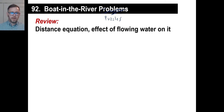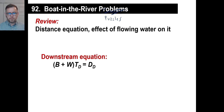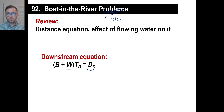So let's say the water speed is 5 miles an hour and you're rowing at 8 miles an hour — your total speed is 13 miles an hour downstream. Now you turn around. You're rowing at 8 miles an hour, but the water is flowing against you at 5 miles an hour, so your net speed would be 3 miles an hour. We still use distance equals rate times time. The downstream rate is the speed of the boat plus the speed of the water times the time.